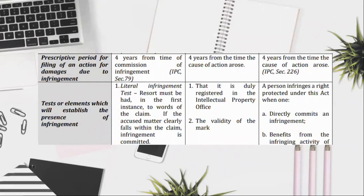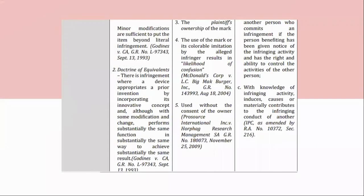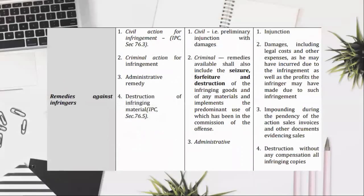Minor modifications are sufficient to put the item beyond literal infringement. Gaudens v. CA, GR No. 97343, September 13, 1993. (2) Doctrine of equivalence: there is infringement where a device appropriates a prior invention by incorporating its innovative concept and, although with some modification and change, performs substantially the same function in substantially the same way to achieve substantially the same result. Gaudens v. CA, GR No. 97343, September 13, 1993. (3) Economic Interest Test: when the process discovers economic interests are compromised, i.e., when others can import the products that result from the process, such an act is said to be prohibited.